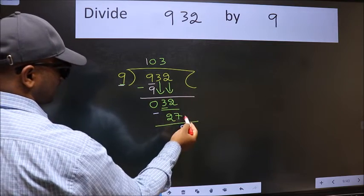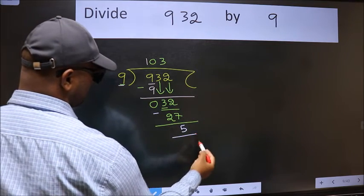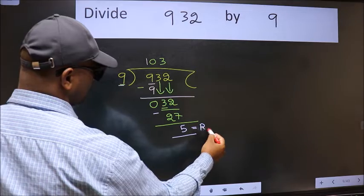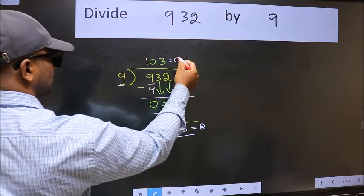No more numbers to bring it down. So we stop here. This is our remainder and this is our quotient.